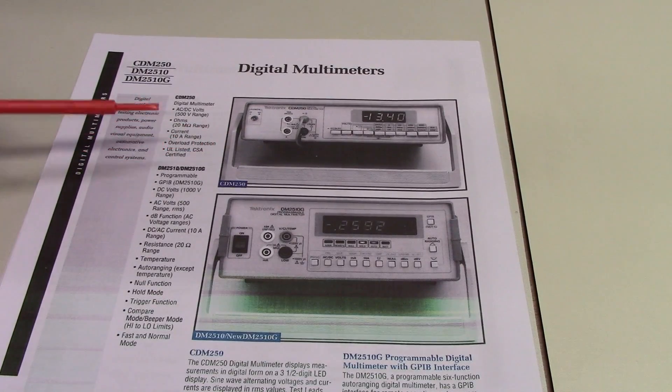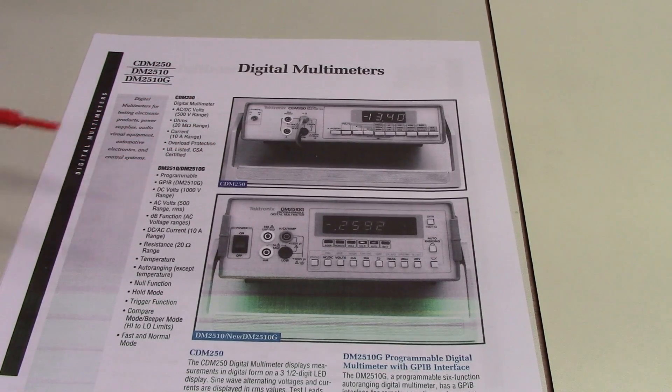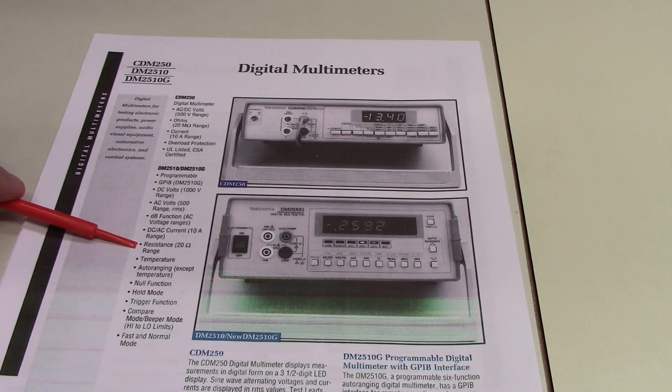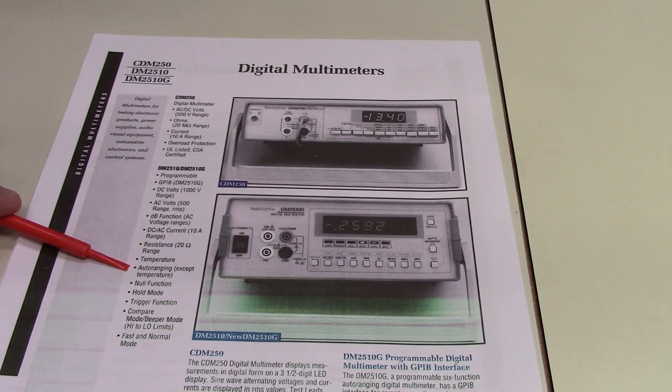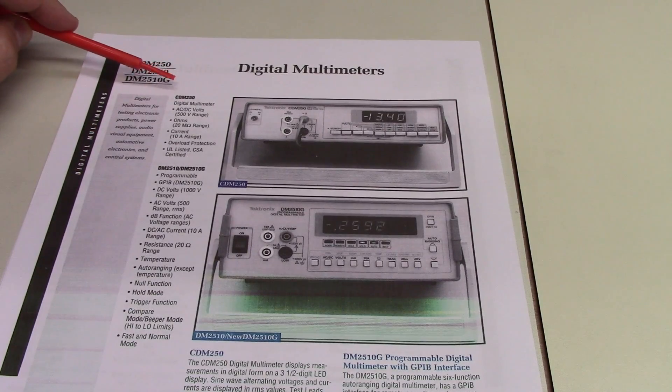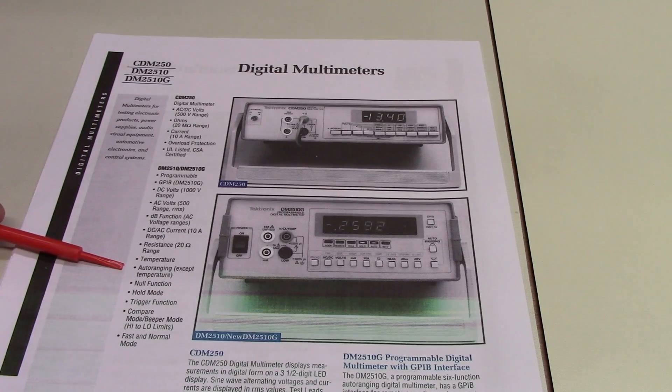This is a programmable multimeter. It's got a GPIB computer interface. It will measure DC up to 1000 volts, AC 500 volts RMS. It will measure AC in dB, does the usual business with current. Not an inspiring range of resistance, up to 20 megaohms, but perfectly adequate. And the nice thing about this is that it's auto-ranging. Unlike the CDM250, this will auto-range on all of its functions except for temperature.